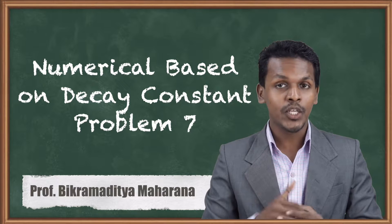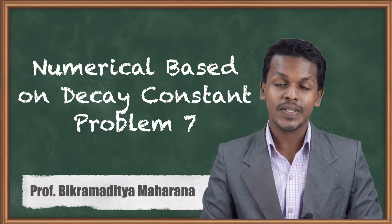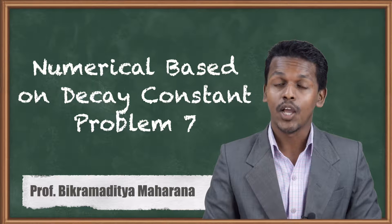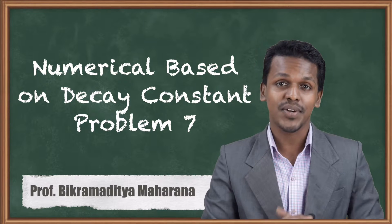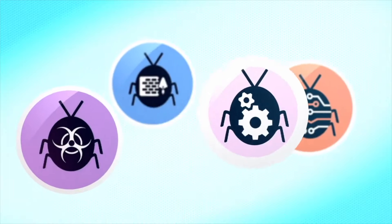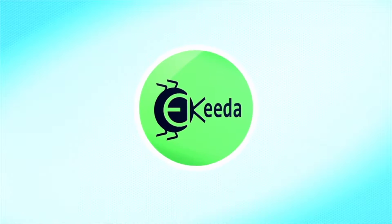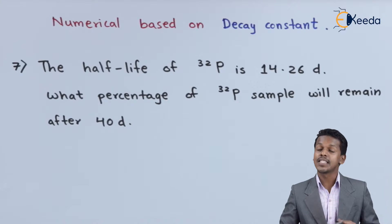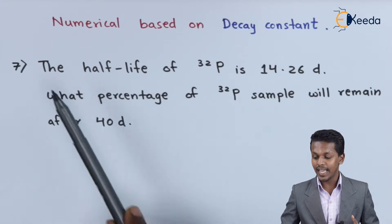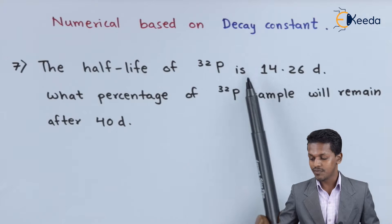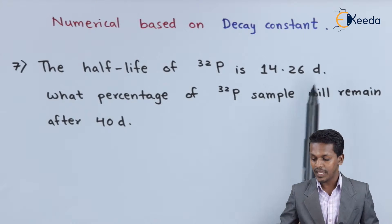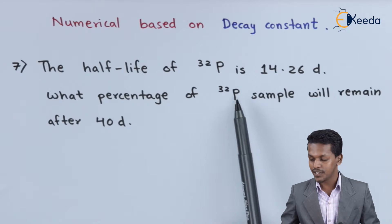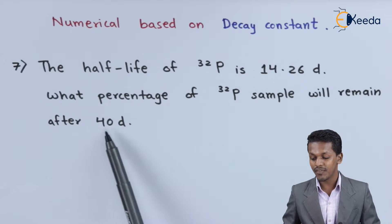Hello friends. Now we are going to talk about the numerical based on the decay constant, problem number 7. The question is: the half-life of Phosphorus-32 is found to be 14.26 days. What percentage of the Phosphorus-32 sample will remain after 40 days?